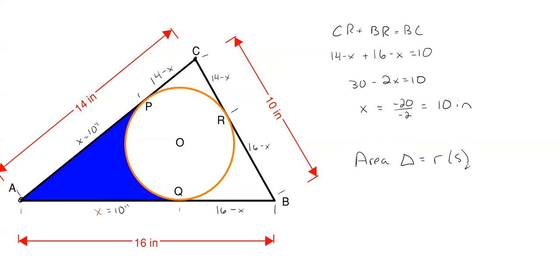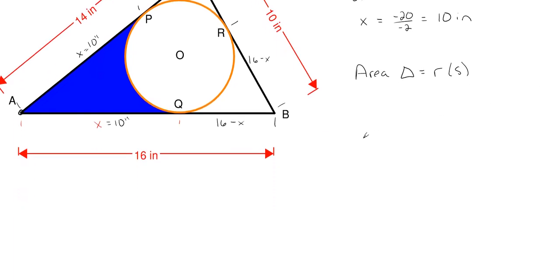Since we have the overall perimeter, we can use Heron's formula to get the area of the triangle, and from there find the radius of the inscribed circle. Let S equal half the perimeter. S equals one half of 14 plus 10 plus 16, which gives us a total of 20 inches for half our perimeter.